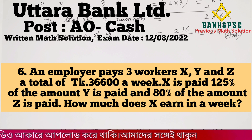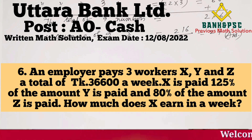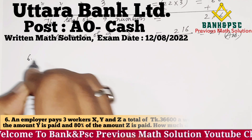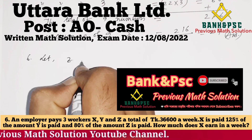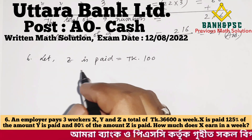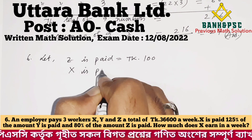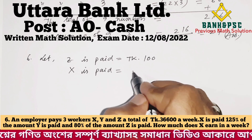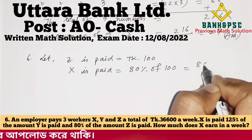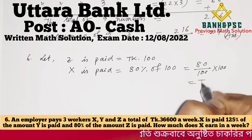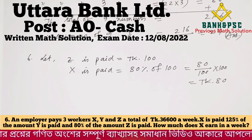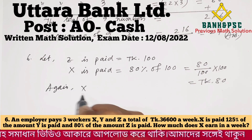X is 125% of Y and Z is 80% of — let's set up the relationships. If Z's pay is 100, then X is paid 80% of Z: 80/100 x 100 = 80.